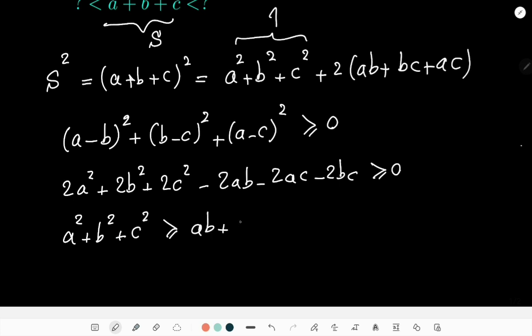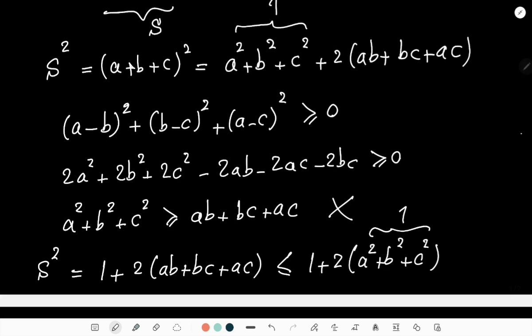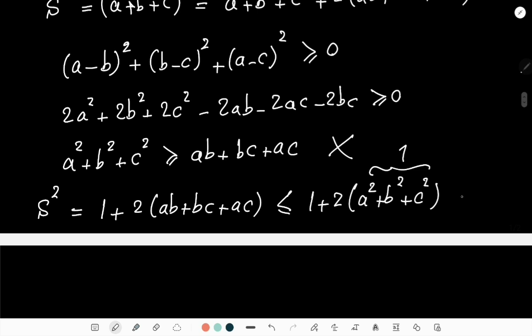So going back to S, we have S squared equals to one plus two times ab plus bc plus ac. But if you look at this expression here, this must be definitely less than a squared plus b squared plus c squared, but this was one according to our condition here.